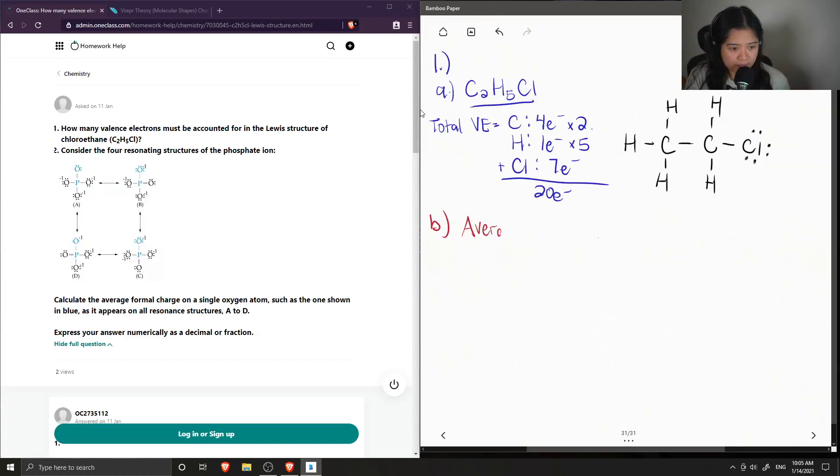So to calculate the average formal charge of the single oxygen, this is equal to the total charge of oxygen divided by the number of oxygen atoms.